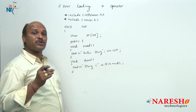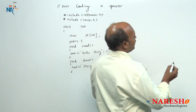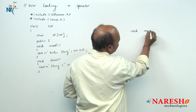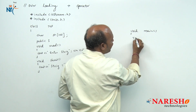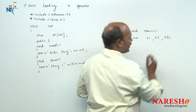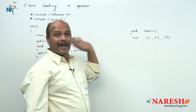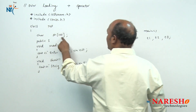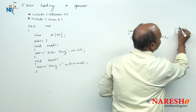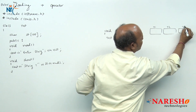Now the actual concept: in the main function I am going to declare three objects — t1, t2, t3. Observe carefully. Three objects are created, and the class already has the string variable `st[100]`, so each object — t1, t2, and t3 — contains the data member `st`.